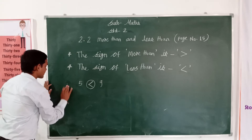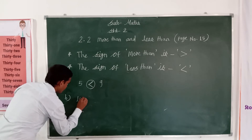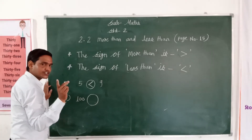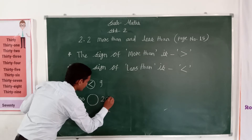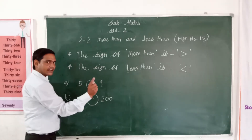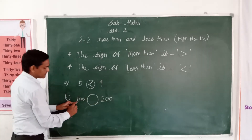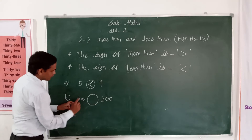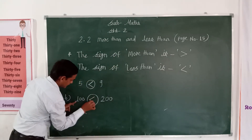Now the second example. The first number is 100 and the second number is 200. So the first number is less than the second number. So 100 is less than 200.